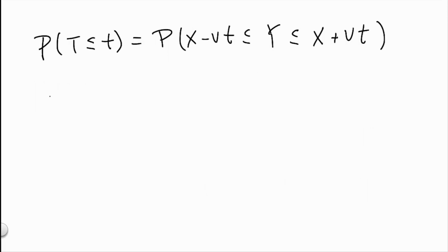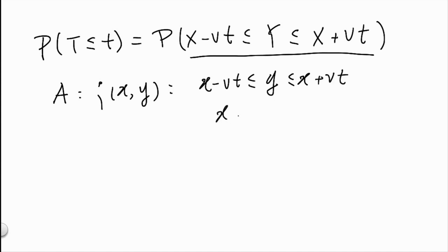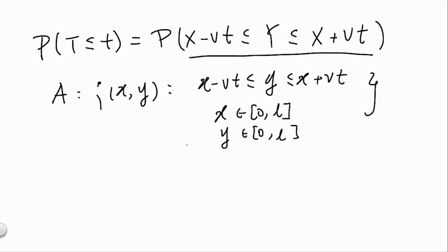To compute this quantity, we'll define a set A as the set of all points that satisfies this condition. In particular, it's the set of all pairs (x,y) such that x - vt ≤ y ≤ x + vt, and also that x is within 0 and L and so is y. So the set A will be the set of values we'll be integrating over. We can express the probability as the integral over all (x,y) within the set A, integrating the pdf f(x,y).